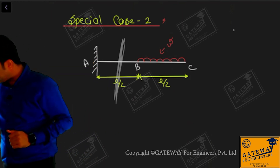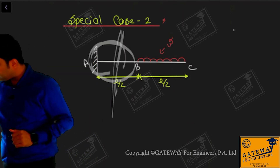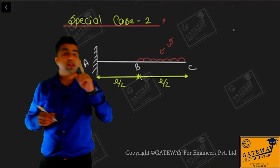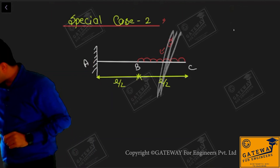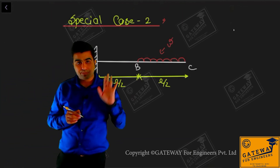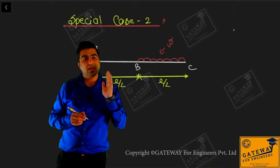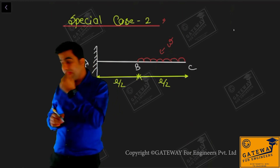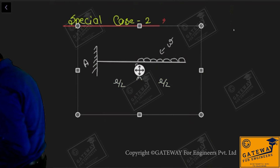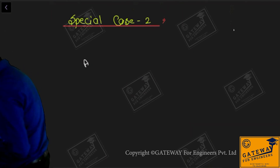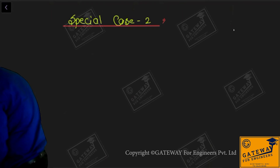If I take a section in AB and write the bending moment equation, its degree will be one. If I write the bending moment equation for BC portion, its degree will be two. I hope you understood this small discussion - it should already be known to you. Now we move on to special case number 2, that is discontinuous UDL.